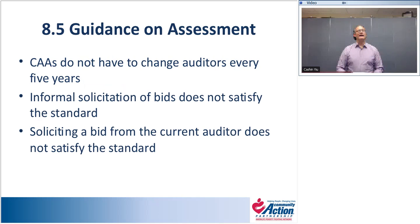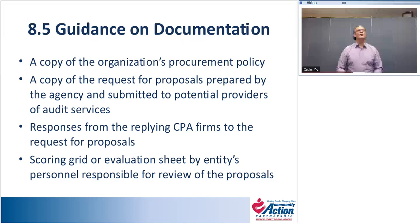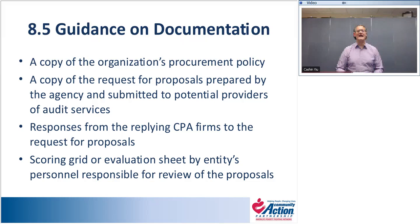Documentation for Standard 8.5 could include a copy of the organization's procurement policy, a copy of the request for proposals submitted to potential providers of audit services, responses from CPA firms to the request for proposals, and/or a scoring grid or evaluation sheet by personnel responsible for reviewing proposals. The most straightforward documentation would simply be a copy of the RFP submitted to potential providers.